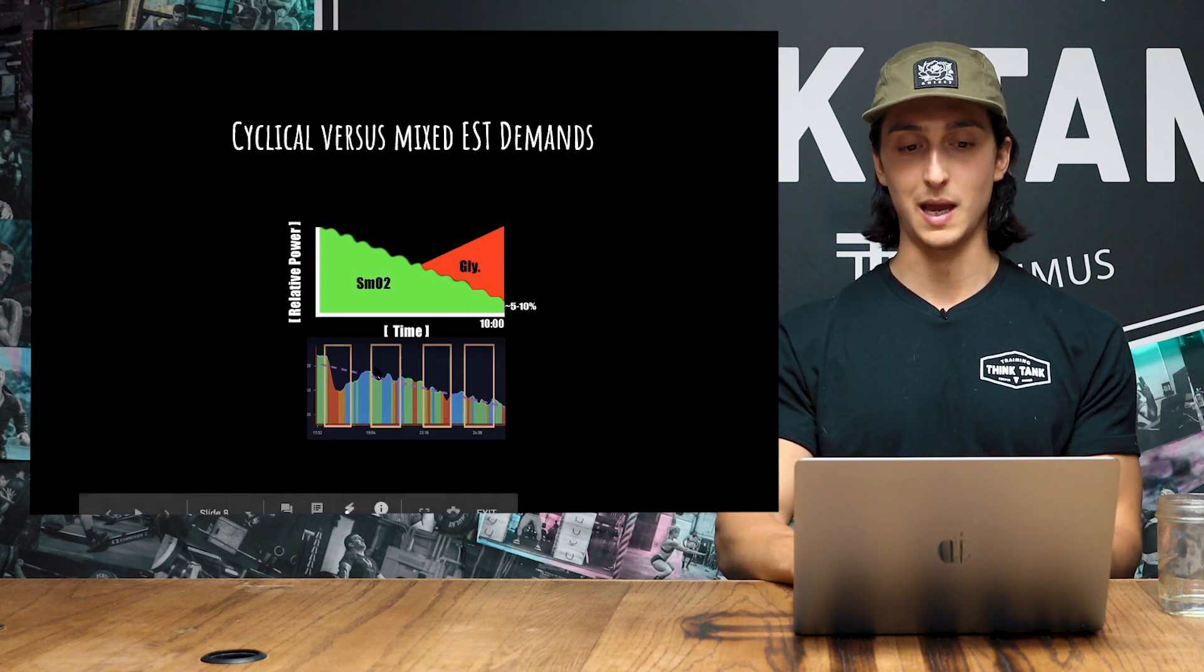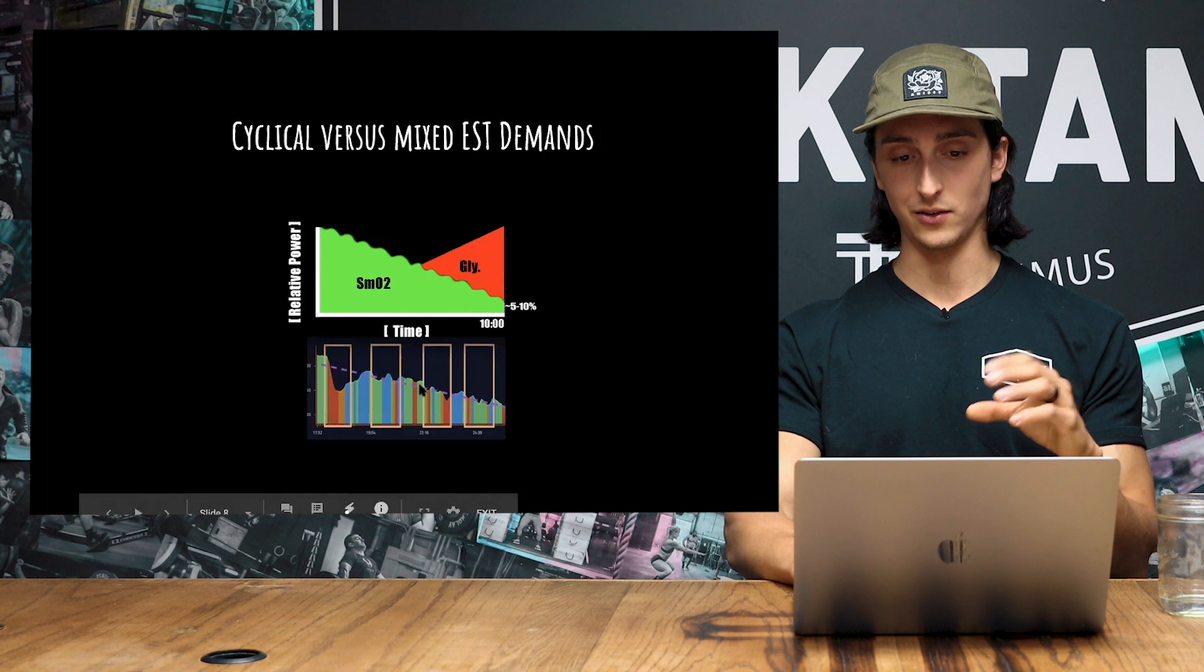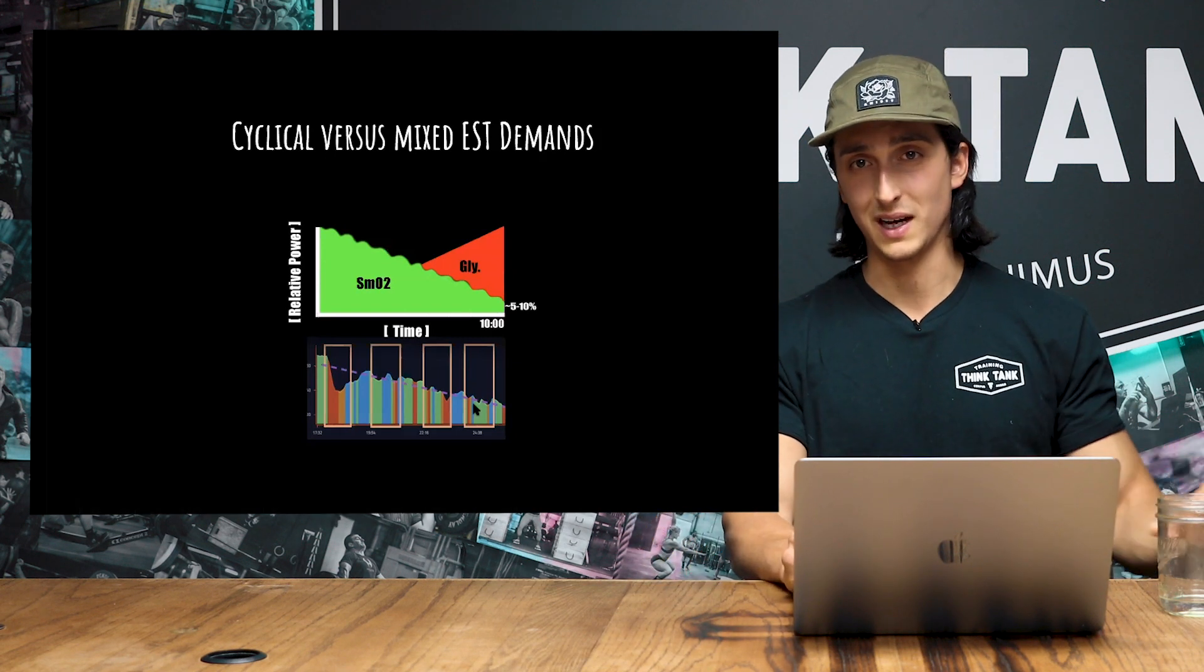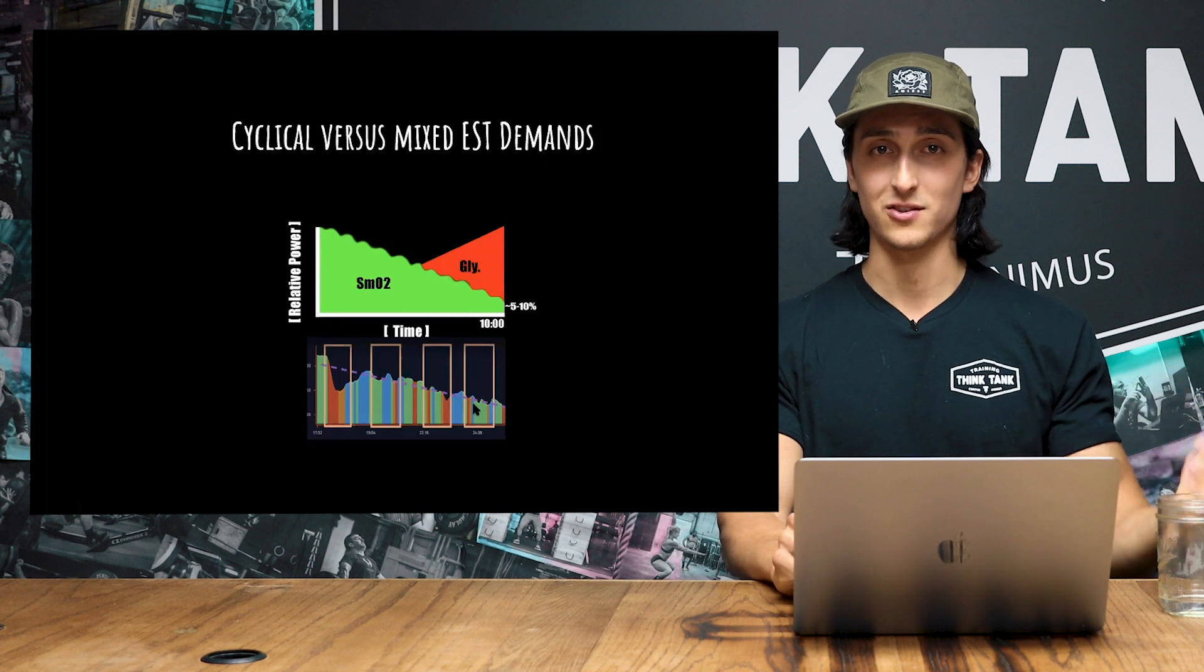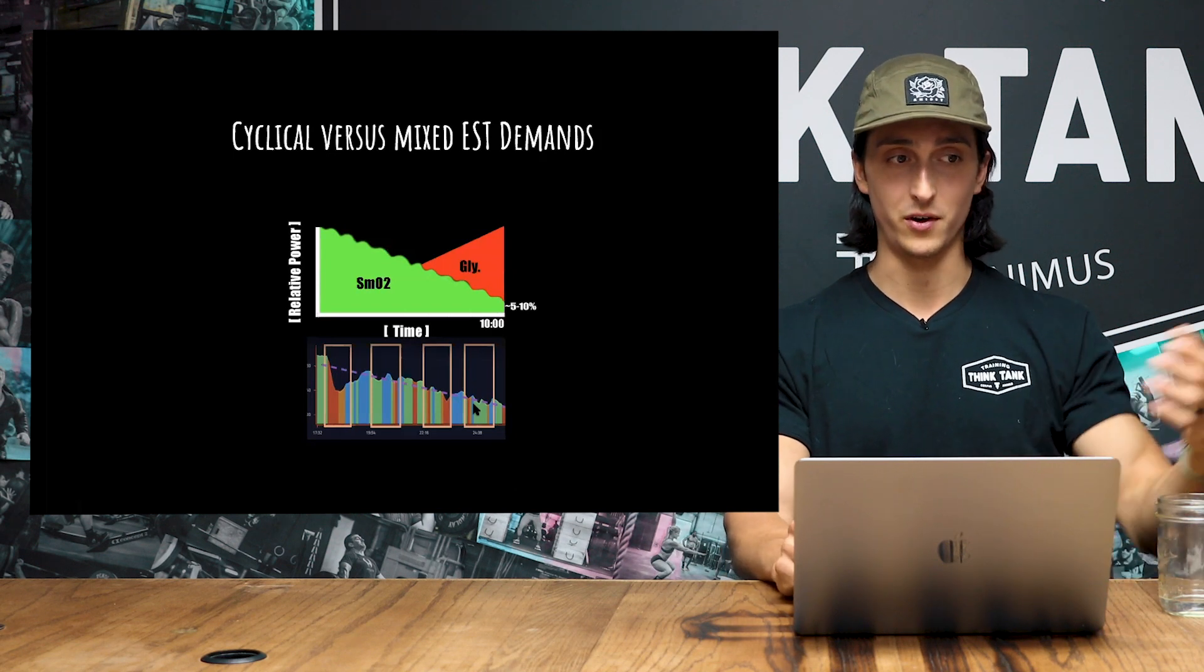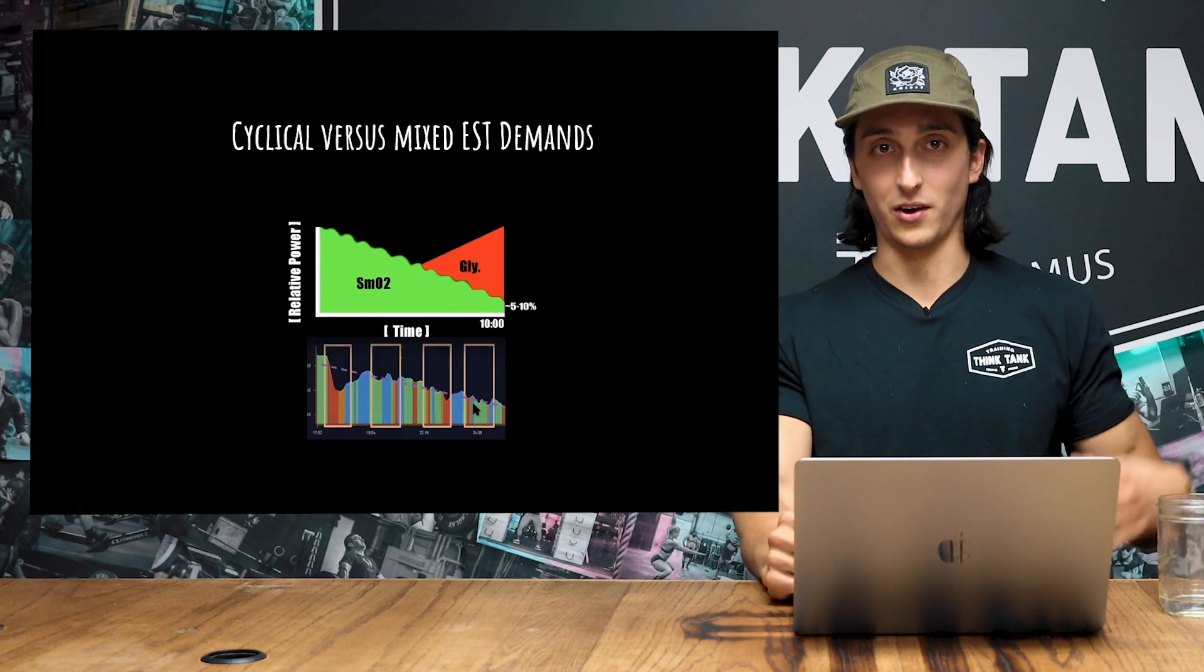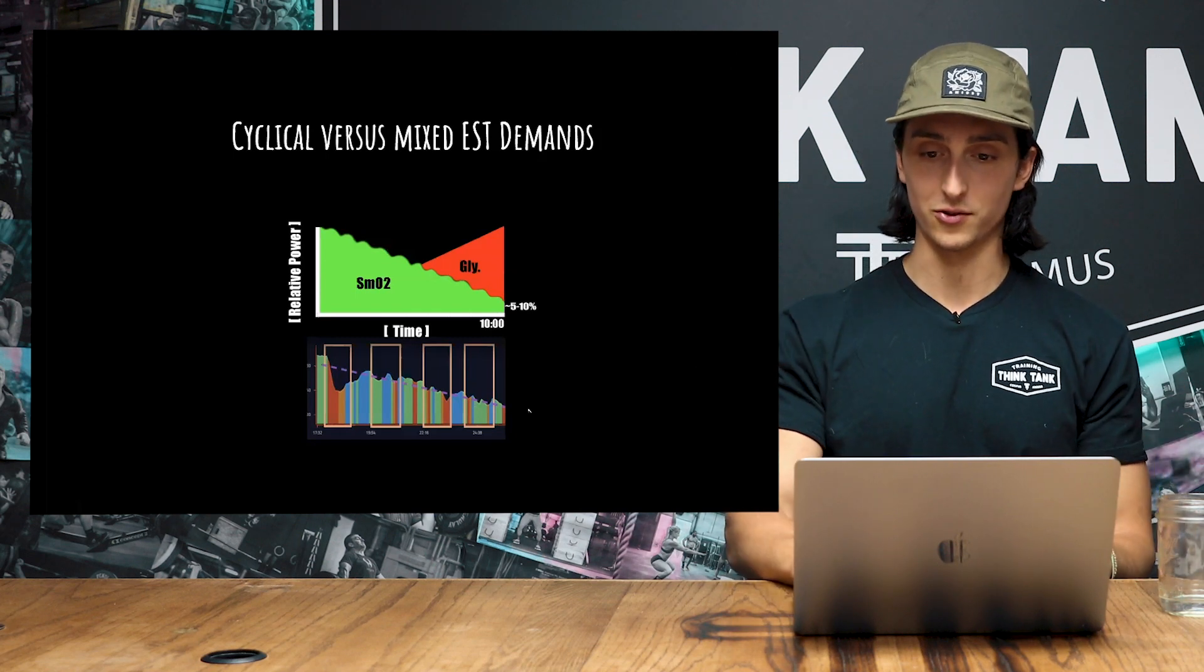So this is a Moxy trend on the bottom of one of our Games athletes. And you see this nice linear rate of oxygen desaturation in the muscle where you watch even bubble level Games athletes or sanctional athletes. And some of them, you watch them do CrossFit and you look at their muscle physiology, it basically looks like they're doing circuit training on machines in a commercial gym.